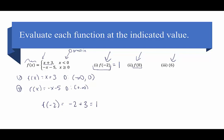How about f of 0? We need to decide where 0 falls in the domain. Is 0 less than 0, or is 0 greater than or equal to 0? Since 0 equals 0, it falls into the second piece. So f of 0 equals negative 0 minus 5, which is negative 5. We can also write these as ordered pairs, where x is what we're evaluating and y is the result: negative 2 comma 1, and 0 comma negative 5.